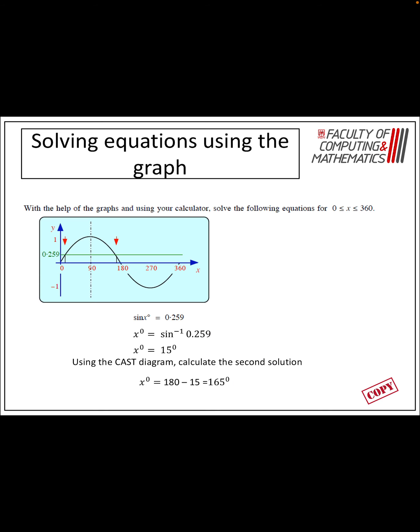Here's a full worked example. We've got sin x is equal to 0.259. I'm drawing y equals 0.259 and I want to know when sine is hitting that line — we can see there are two solutions. To get the first answer, I do shift sine of 0.259, which gives me 15 degrees from my calculator. To get the second answer, I use my CAST diagram. Sin is positive, so because sin is positive, I want it in the second quadrant as well. So I'm going to do 180 minus that related angle to give me 165 degrees.